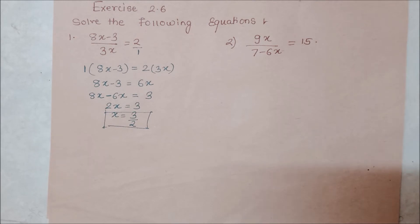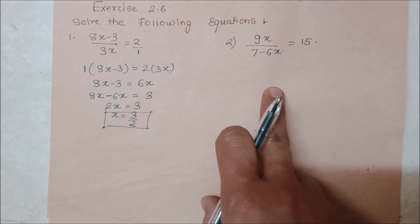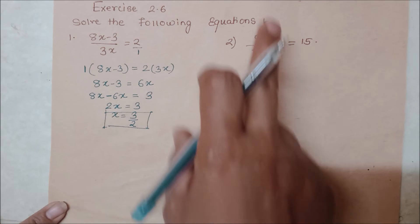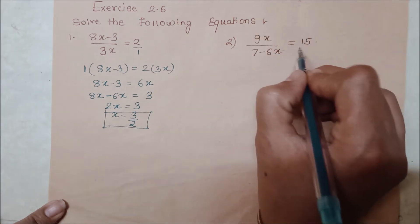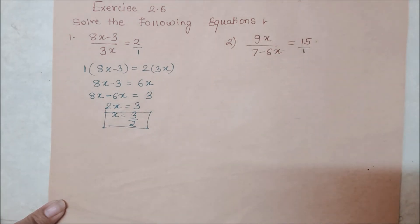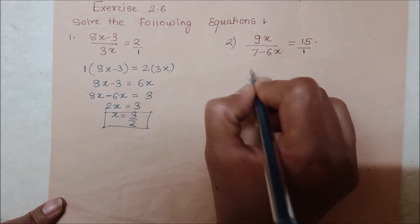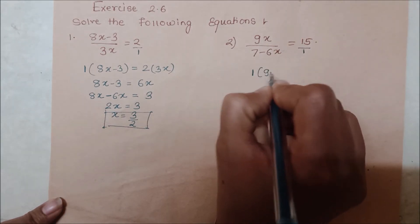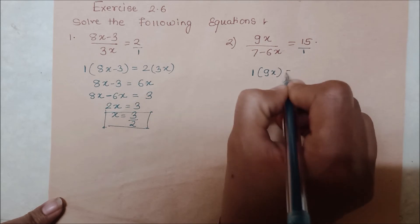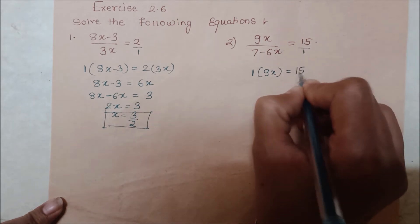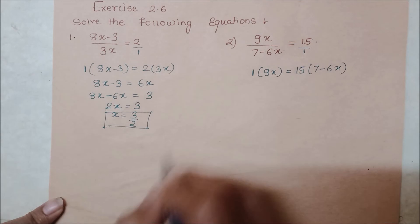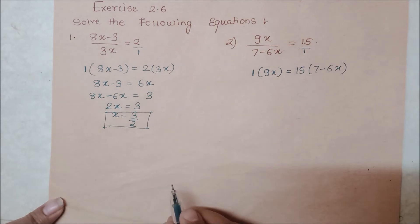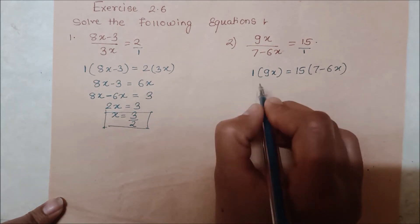Bahut hi aasaan hai. Next question dekhte hain — kaise karna hai humein. Yahan bhi wahi karna hai, cross multiply karna hai. 15 ke neeche koi number nahin hai, matlab hum maanenge yahan 1 diya hua hai. Bas solve karna hai: 9x ko 1 se, toh 1 into 9x is equal to yahan aayega, aur 15 ke saath mein yah poori term multiply mein jayegi — matlab 7 minus 6x.